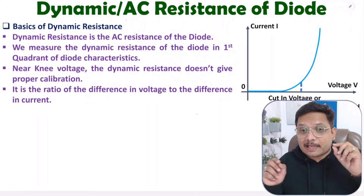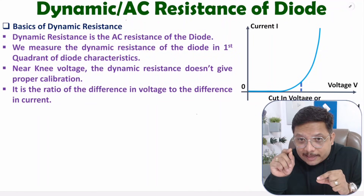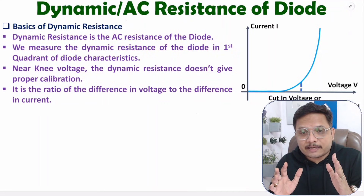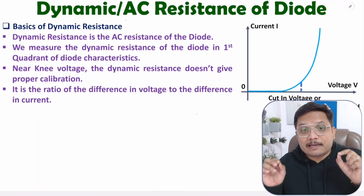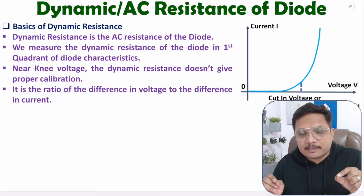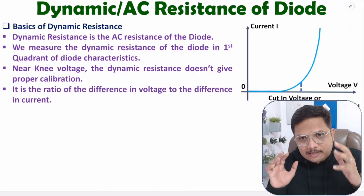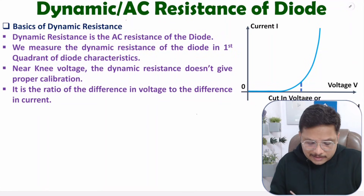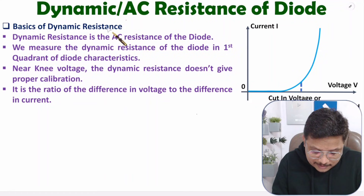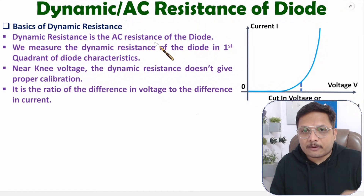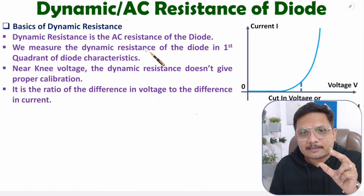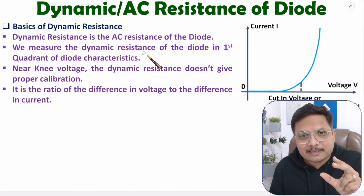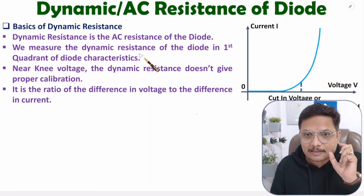After that, I'll explain how to calibrate dynamic resistance from its VI characteristics, and at last I'll derive the equation of dynamic resistance of a diode. So let us start with the basics of dynamic resistance. Dynamic resistance means AC resistance of a diode — DC resistance means static resistance and AC resistance means dynamic resistance.